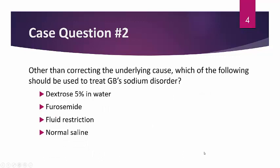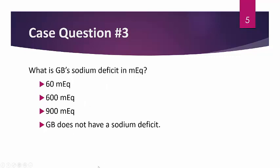The next question: other than correcting the underlying cause of GB's sodium disorder, which of the following should be used to treat it — dextrose 5% in water, furosemide, fluid restriction, or normal saline? And the last question: what is GB's sodium deficit in milliequivalents — is it 60, 600, 900, or does GB not have a sodium deficit?